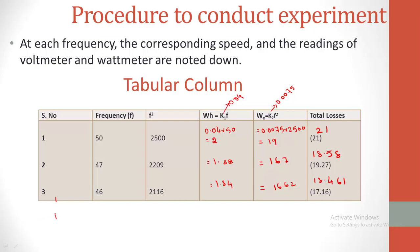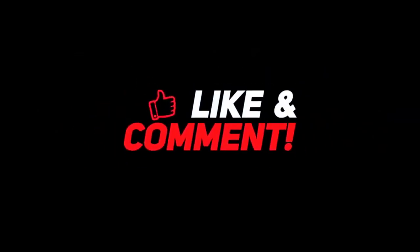For conducting this experiment, we need three devices: one is the transformer, in which we are going to separate the losses; the next is the alternator or AC generator, which is required to get a variable frequency; and one more device is the motor, which is used to run the generator.